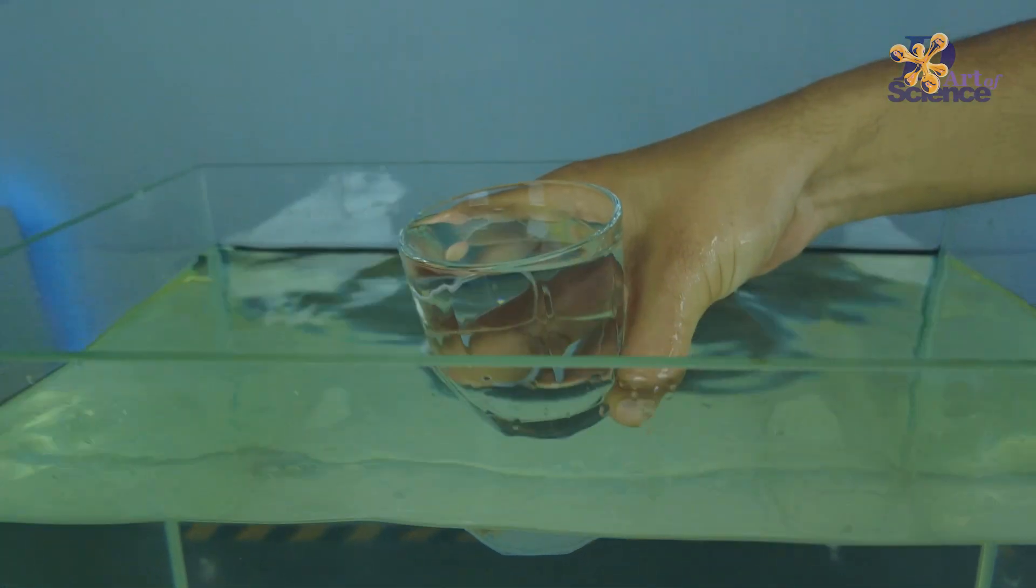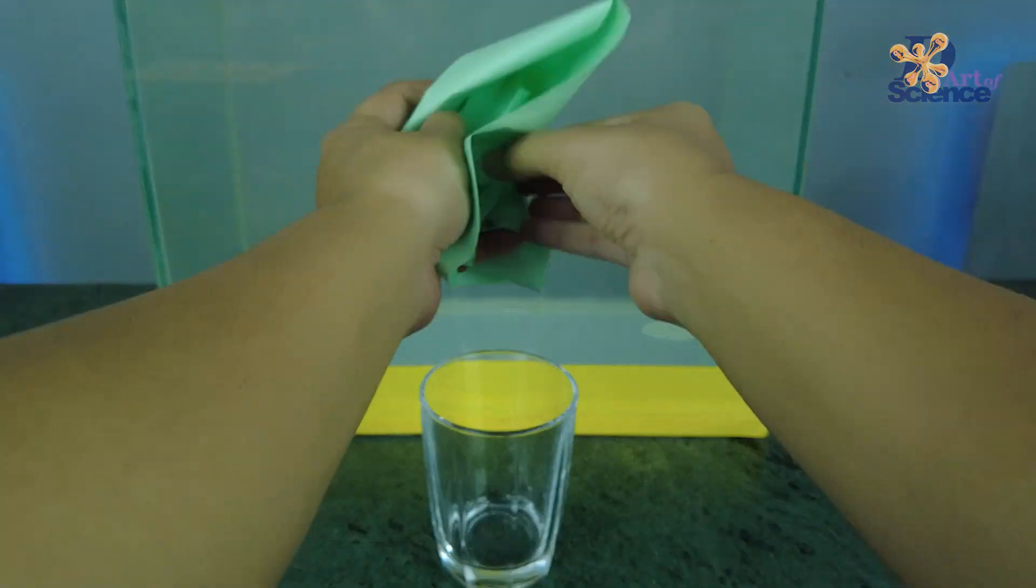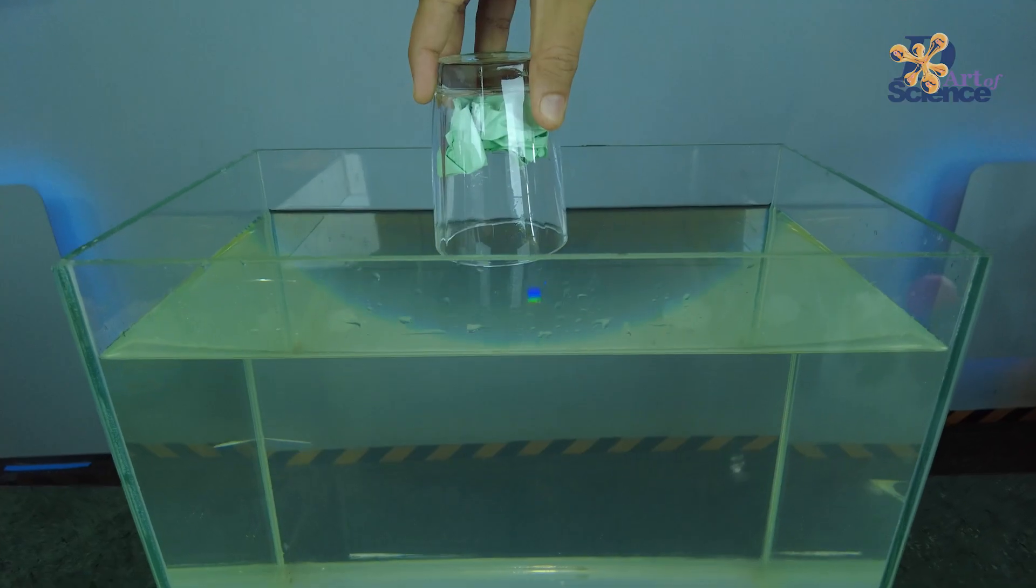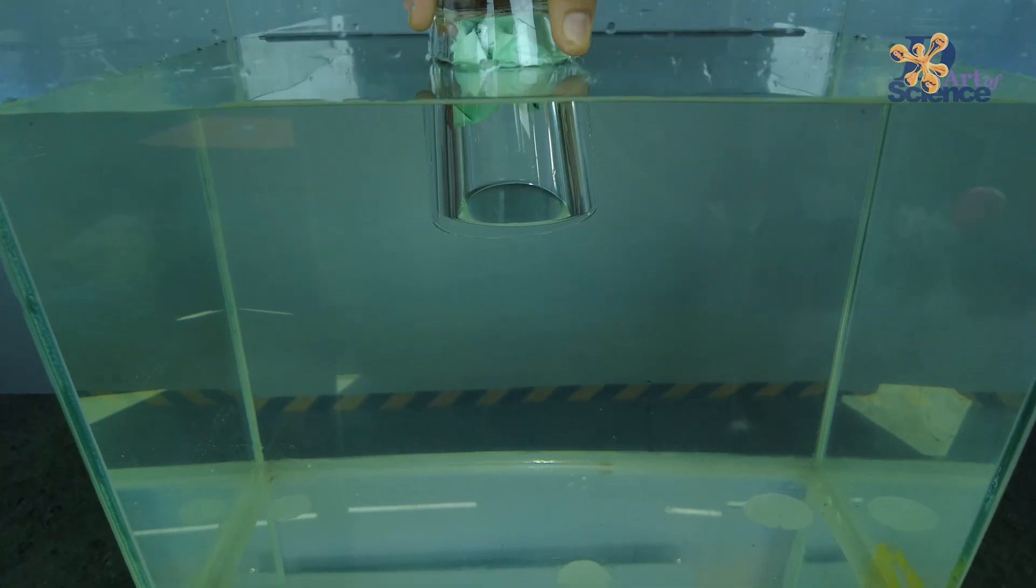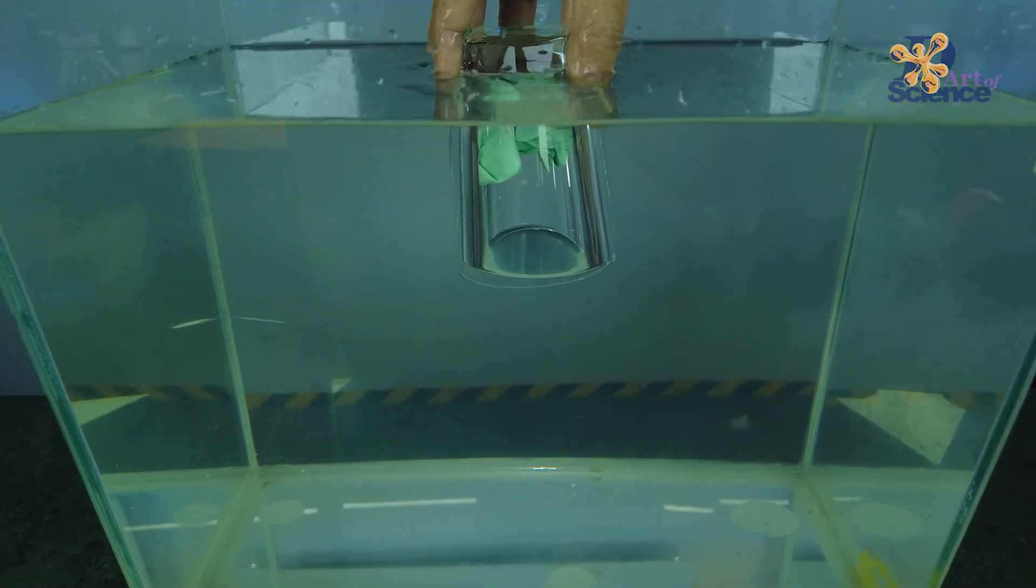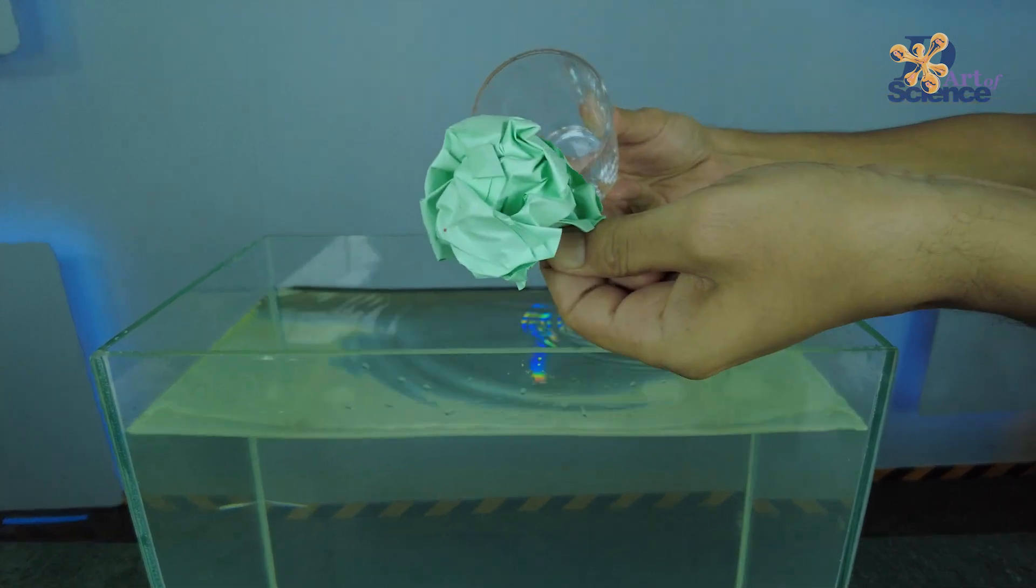Here's how you show that the glass had air inside which took space. Crush your paper and put it in the bottom of the glass. Flip the glass upside down and submerge it in water as shown. The glass is completely underwater. Let's remove it and see if anything has happened to our paper.